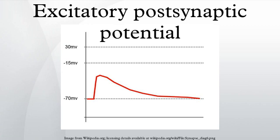In other regions than CA1 of the hippocampus, the field EPSP may be far more complex and harder to interpret as the sources and sinks are far less defined. In regions such as the striatum, neurotransmitters such as dopamine, acetylcholine, GABA, and others may also be released and further complicate the interpretation.